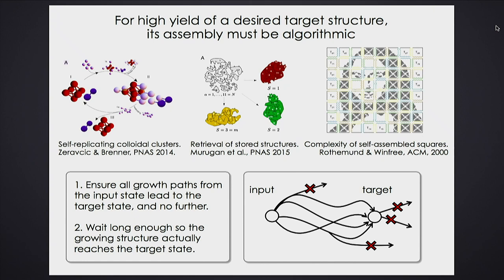Secondly, there should be no paths that take you further away from the target. Thirdly, once you set up this topology, you must have enough time for everything to go from input to target instead of getting stuck halfway. These are the ingredients you need to make the target in high yield — a proof which Winfree and Rothman have put forward. The question then becomes: how do you ensure all growth pathways have exactly this feature?